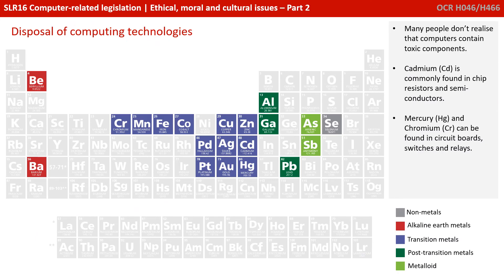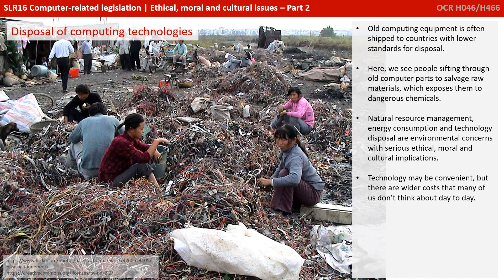Here's another fact many people don't realise: computers contain toxic components. Cadmium, for example, is commonly found in chip resistors and semiconductors. Mercury and chromium can be found in circuit boards, switches and relays. Cadmium is often shipped to countries with lower standards for disposal, where people sift through old computer parts to salvage raw materials, exposing them to dangerous chemicals. Natural resource management, energy consumption and technological disposal are all environmental concerns with serious ethical, moral and cultural implications.